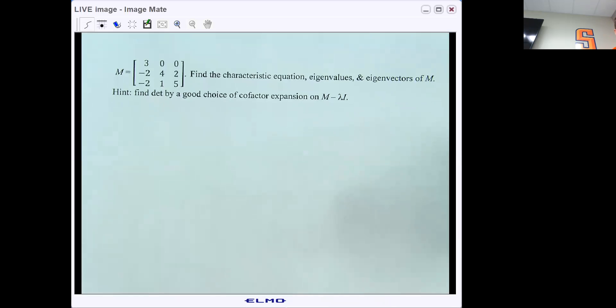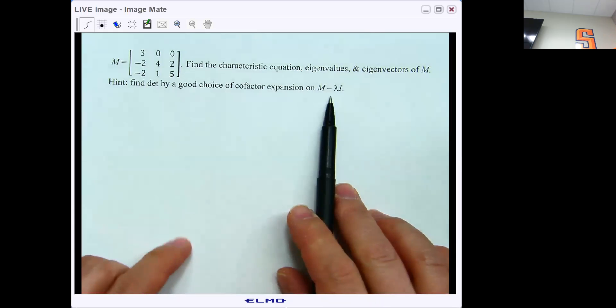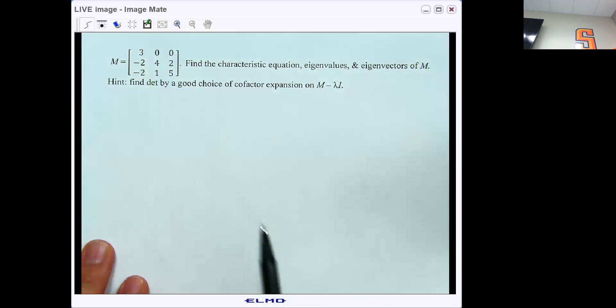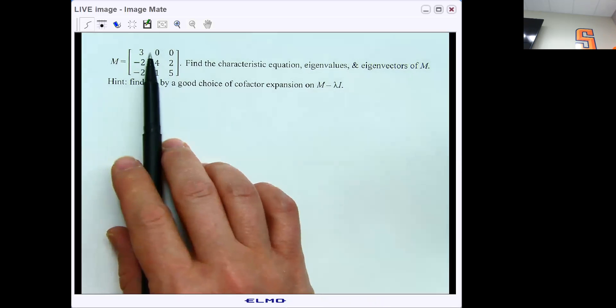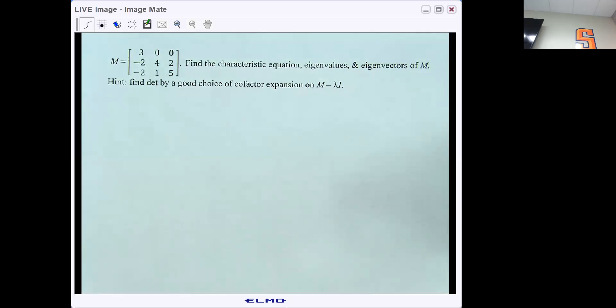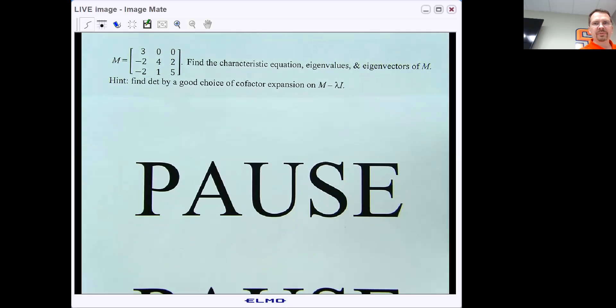So what I want to do now is have you try one. Take matrix M. I want you to find its characteristic equation, eigenvalues and eigenvectors, and I'll give you a hint. I would use a cofactor expansion when finding the determinant of this guy, and I would pick a nice easy cofactor expansion maybe like along the top row. So we'll pause there and pick up in just a minute after you've had a chance to work on it.